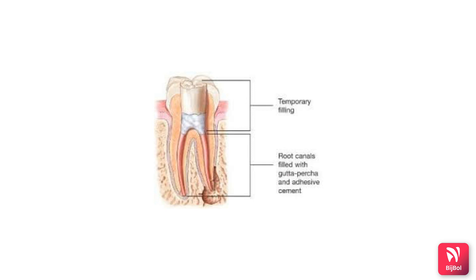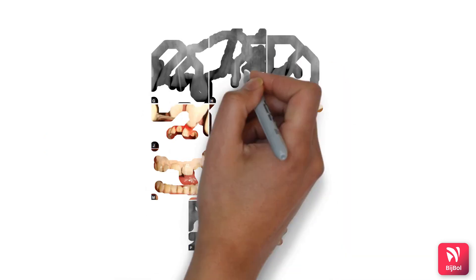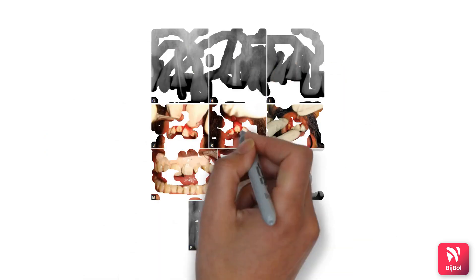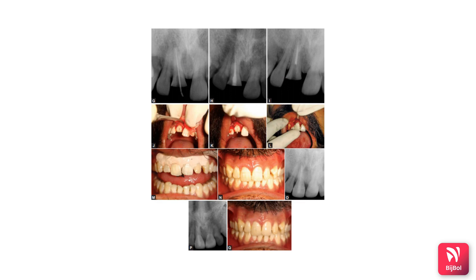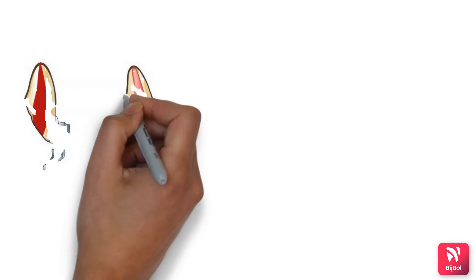When the root portion is long enough to accommodate a post-retained crown, surgical removal of the coronal fragment and surgical extrusion of the root segment is done. Orthodontic extrusion of the root can also be performed after removal of the crown portion.